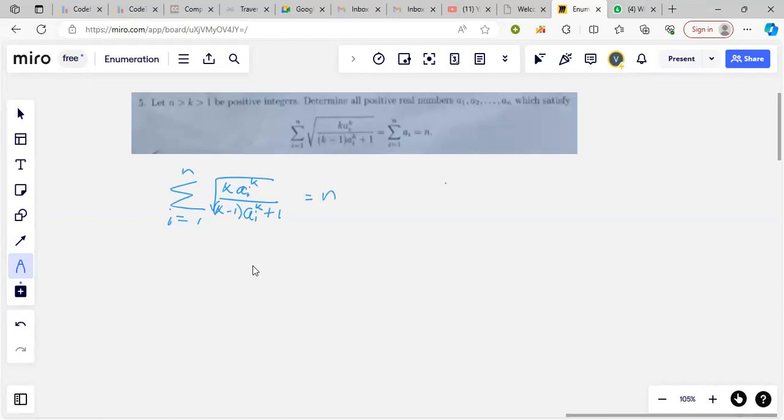First we will apply AM-GM on this number occurring k minus 1 times and the 1. So we get that k minus 1, a i to the k plus 1 by k, is at least k root of a i to the k into k minus 1, which is a i to the power k minus 1.